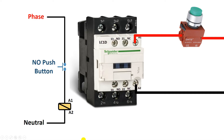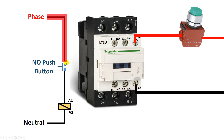At A2 terminal, neutral power supply is connected. Now at A1 terminal, phase supply is coming. In between, a NO push button is connected. By using the NO push button, this phase supply cannot reach the contactor because the circuit is in open condition. If you turn on the power supply, it will flow only up to this point and cannot go further. But when you press this push button, power supply will continuously flow to the contactor. And since the contactor is already getting neutral power supply, your contactor will turn on.